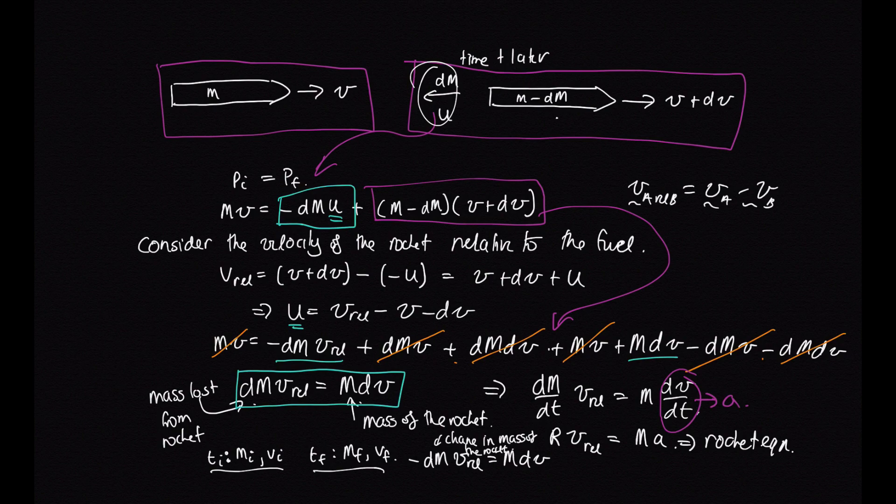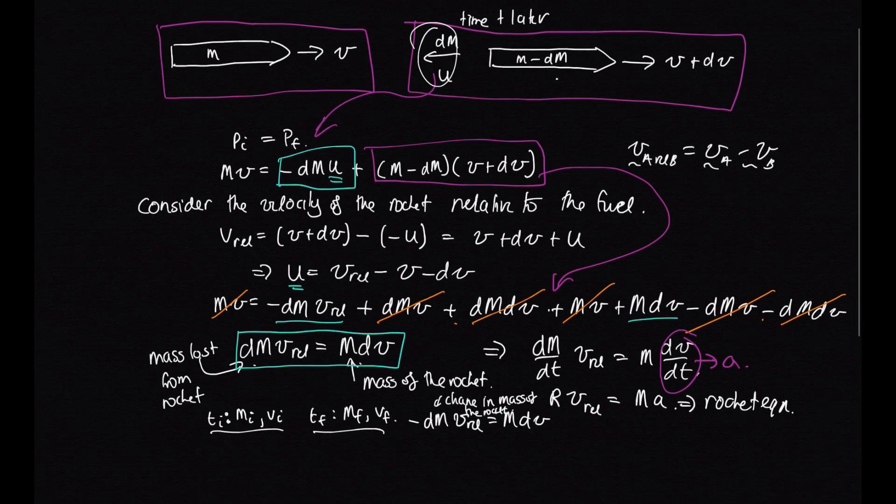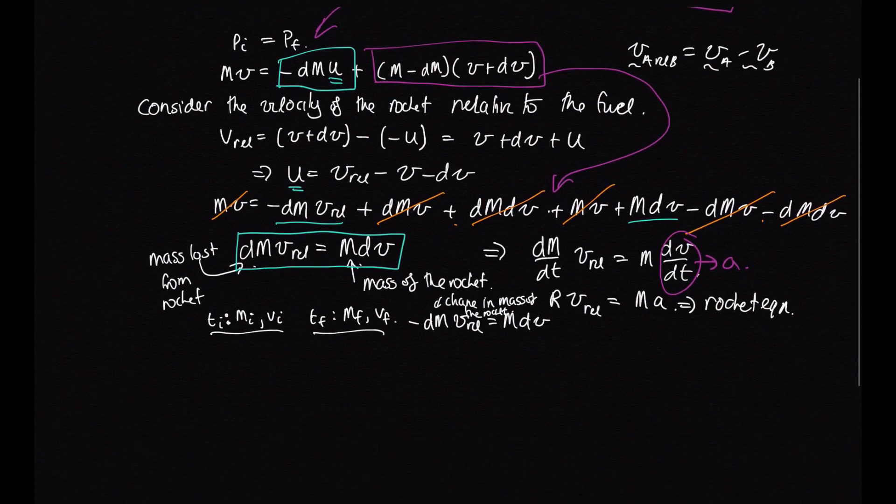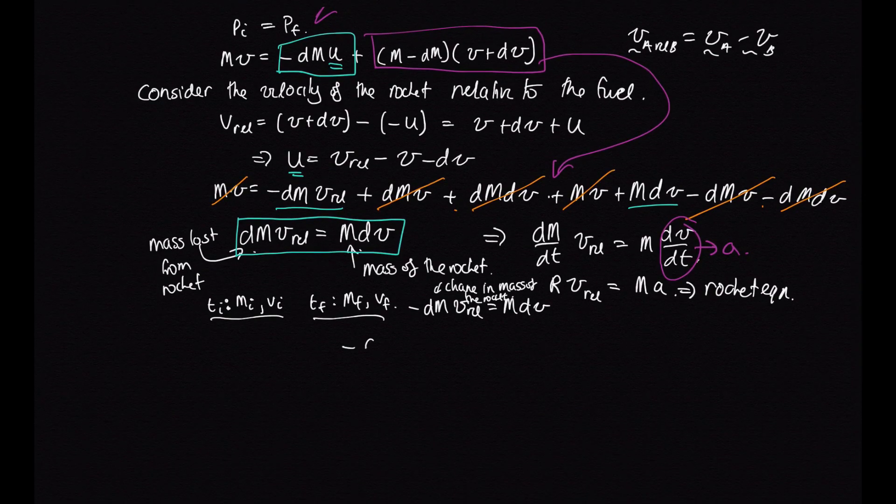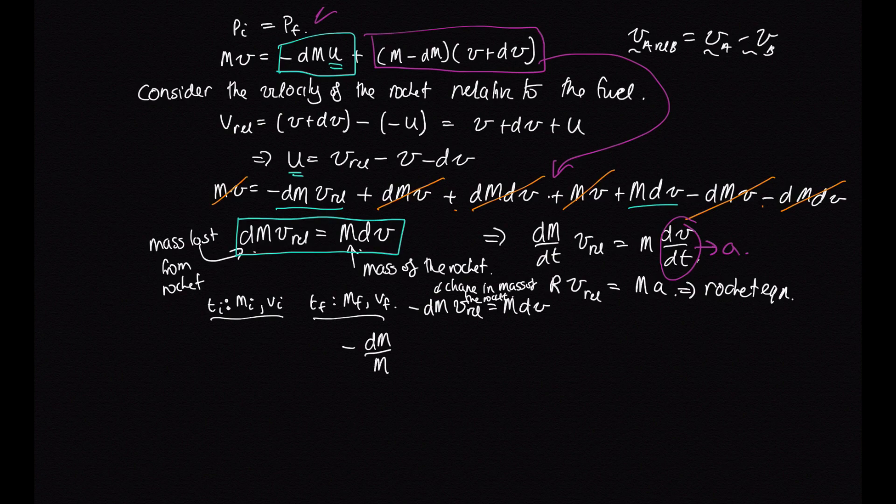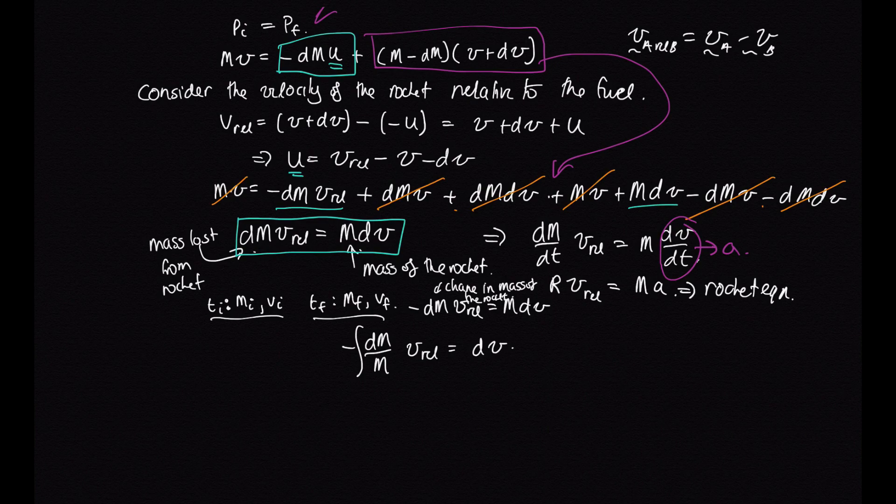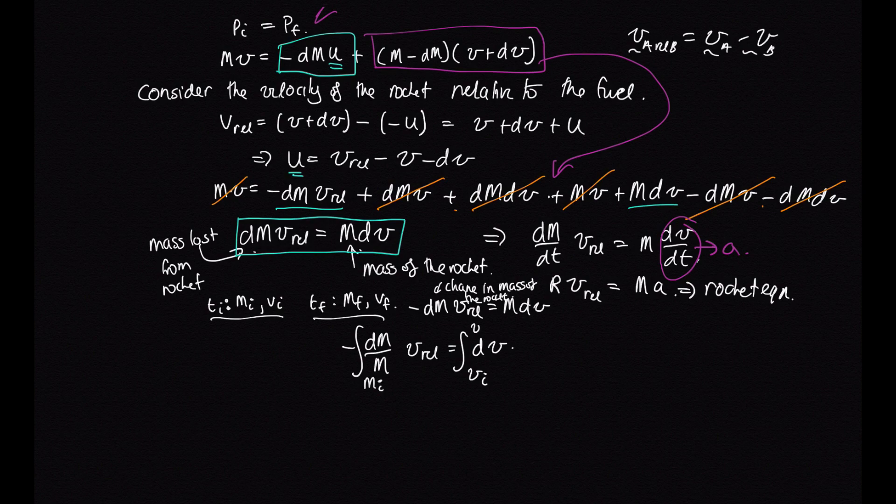So I'll just scroll up to get some more room. So we have minus dm/m times v_rel is equal to dv. And now we're integrating. And we've said that when we have speed v initial, the mass of the rocket is m initial. When we have speed v final, the mass of the rocket is mass m final.